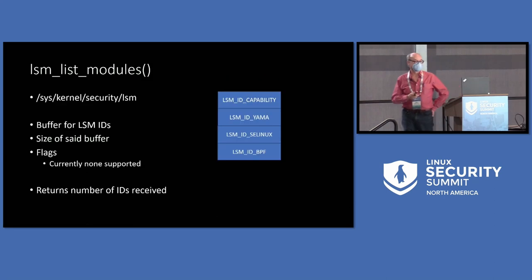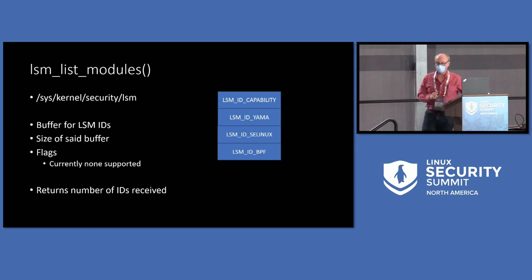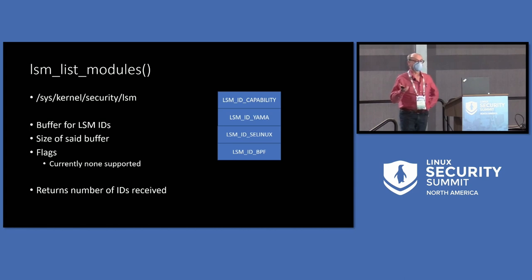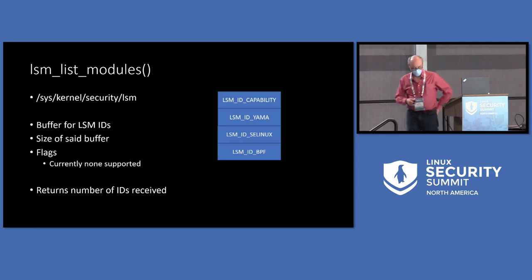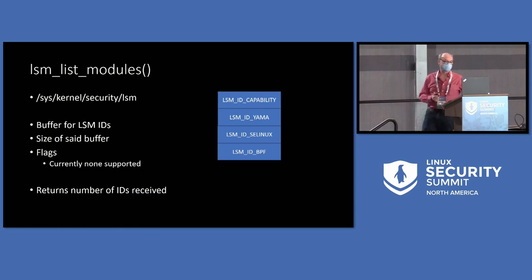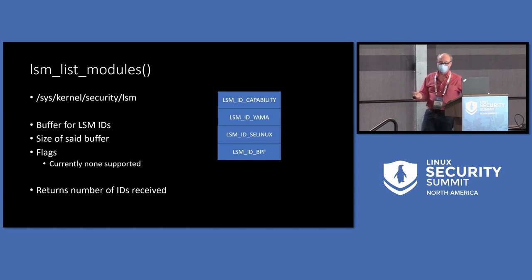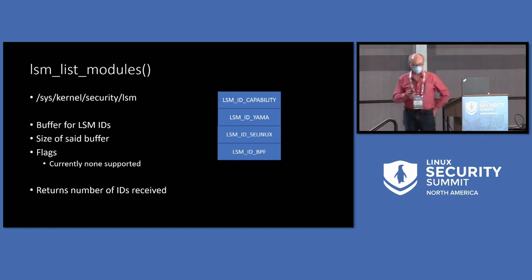We have three system calls. One will list the security modules available on the system. An interesting factoid: we introduced the whole notion of having an LSM ID, which is a numeric value that identifies the security module, in addition to the name. This makes the interfaces a whole lot easier. You don't want interfaces where you have to pass two strings — the name and the value — that's really inconvenient, because either you end up parsing it, and parsing is bad. So we've introduced LSM IDs.